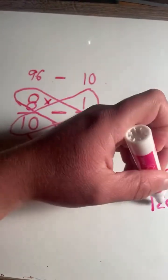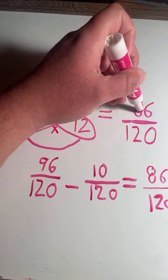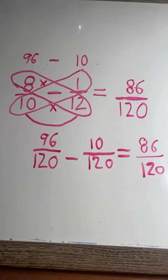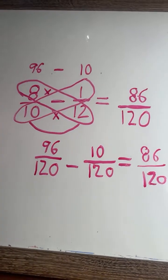Now that we have a common denominator, it will stay the same. So 8 tenths minus 1 twelfth equals 86 120ths.